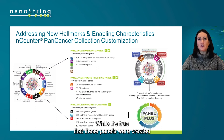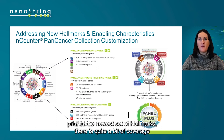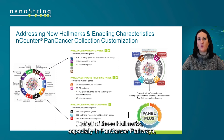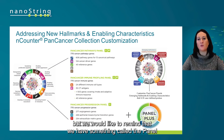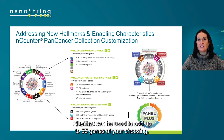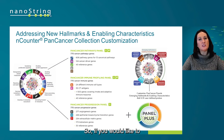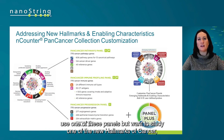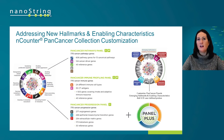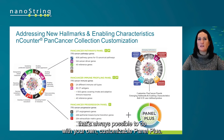While these panels were created prior to the newest set of hallmarks, there is quite a bit of coverage of all of these hallmarks, especially in Pan Cancer Pathways. We'd also like to remind you that we have something called the Panel Plus that can be used to add up to 55 genes of your choosing. So if you'd like to use one of these panels but want to study one of the new hallmarks of cancer, that's always possible with your own customizable Panel Plus.